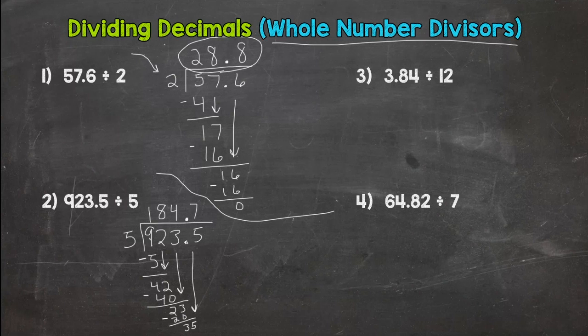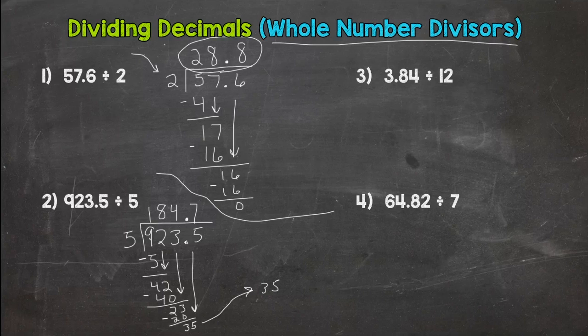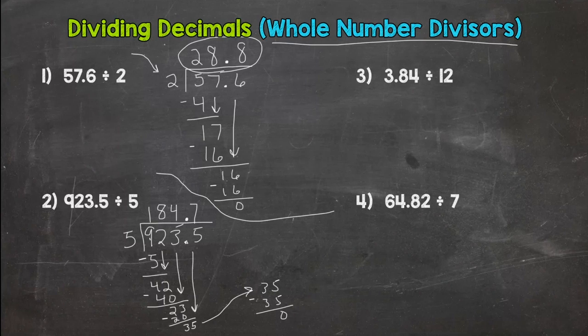7 times 5. I'm going to come over here. 7 times 5 is 35. So I get to 35 minus 35 is 0. So I am done. Nothing else to bring down. Went over to my smallest place value. And I get a 0 at the end. So 184 and 7 tenths.